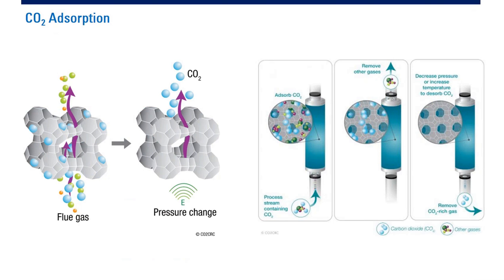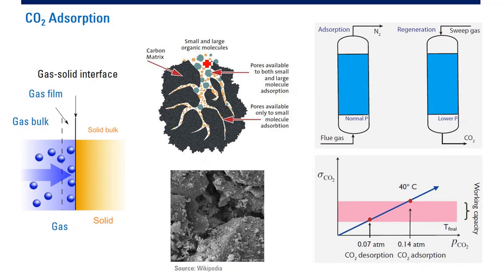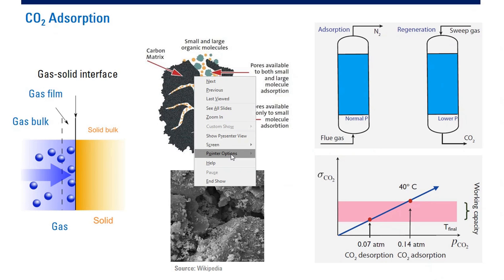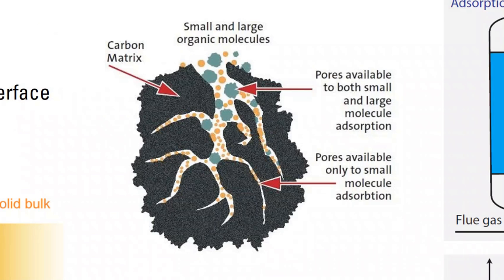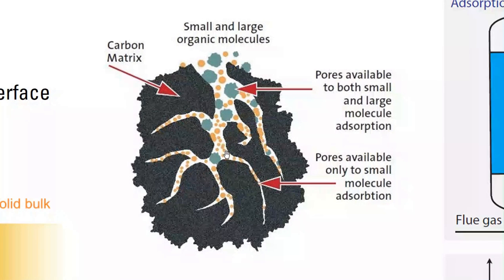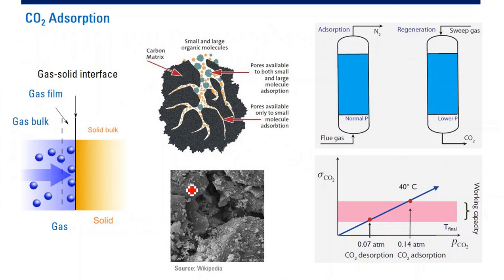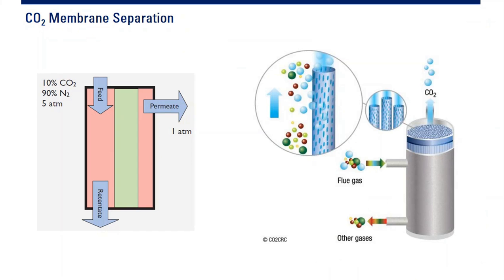For adsorption, you use a solid material to store the CO2. The material is porous, and the CO2 enters the tiny porosity of this material. The CO2 is stored and adsorbed onto the internal surface of the absorbent. That covers CO2 adsorption.